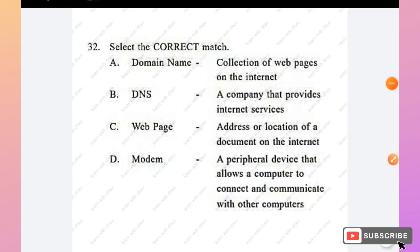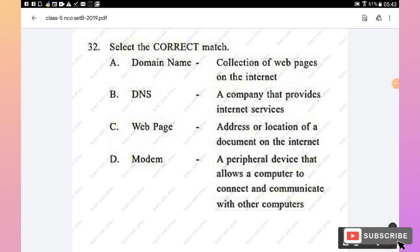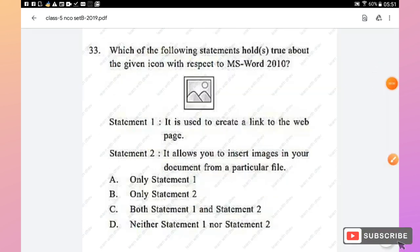Question 32: Select the correct match. Domain name — collection of web pages — is wrong (that is a website). DNS — company providing internet services — is wrong. Web page — address/location of a document — is wrong. Modem — a peripheral device that allows a computer to connect and communicate with other computers — is correct. Option D (modem) is the right answer.